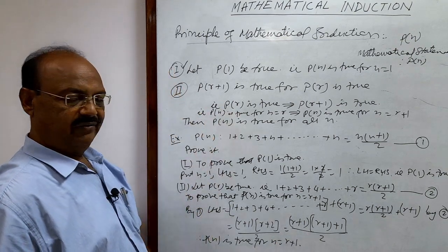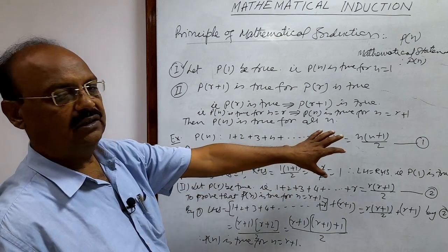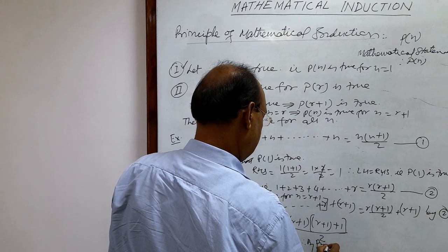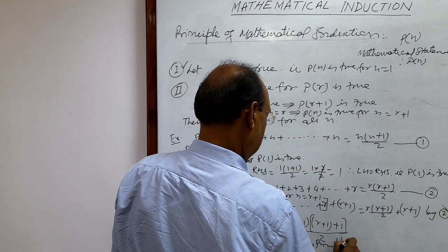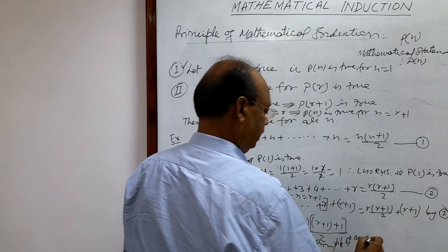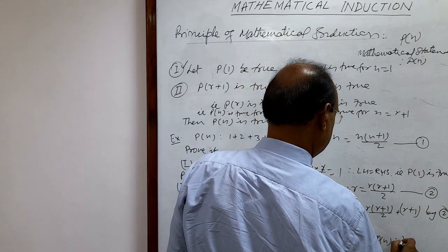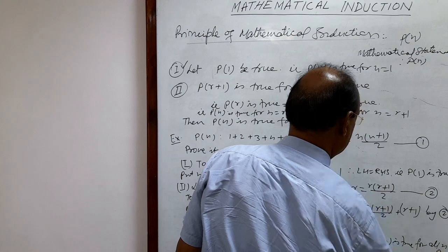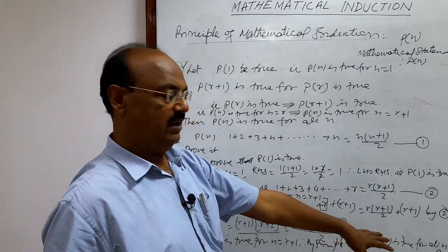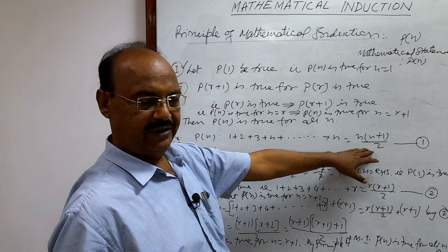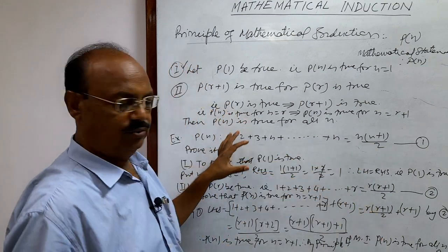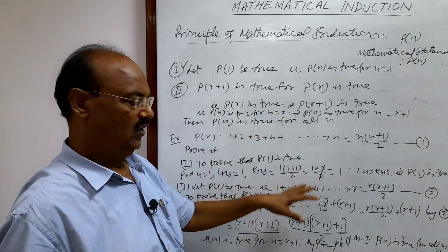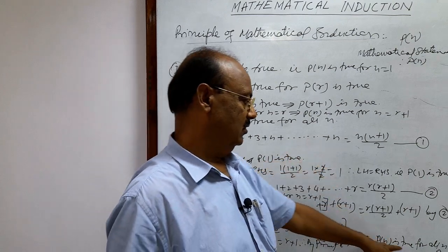By the principle of mathematical induction, we get the result: P(n) is true for all n. The given statement has been proved and generalized. This is the way to establish or prove any given statement for all n — this statement is true for all n.